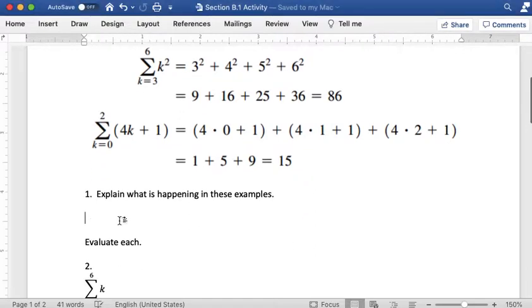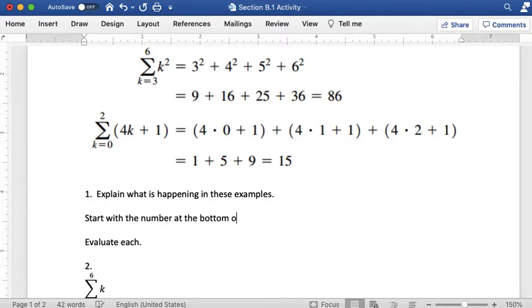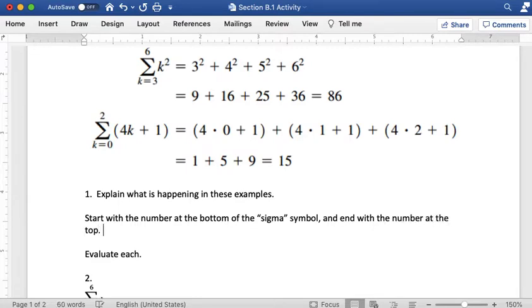So let's write this out. What is happening is that we start with the number at the bottom of the sigma symbol and end with the number at the top. And then we are plugging in every whole number between those two numbers, including them.